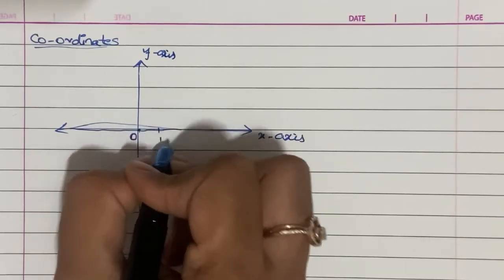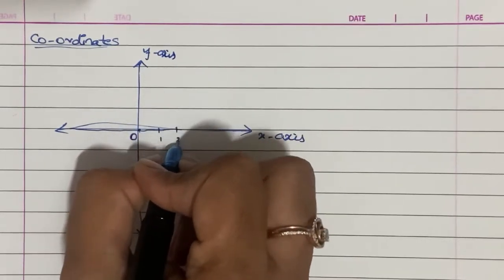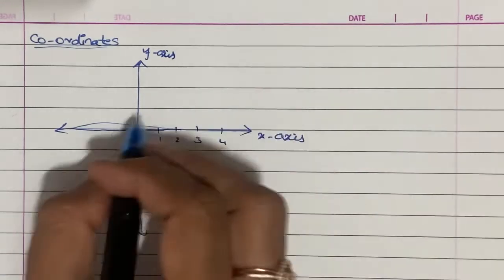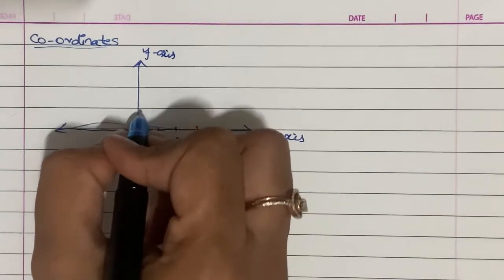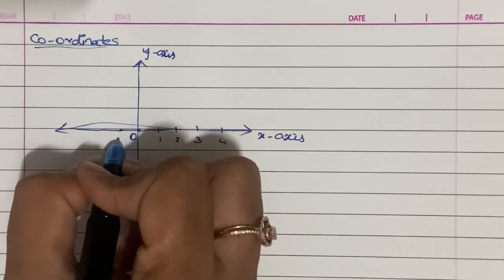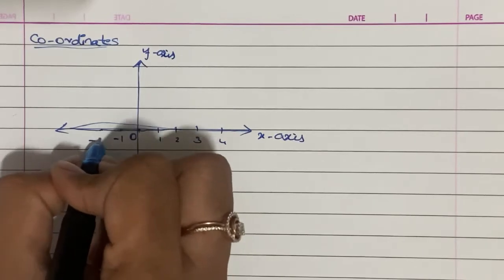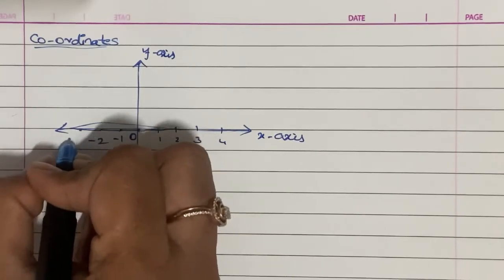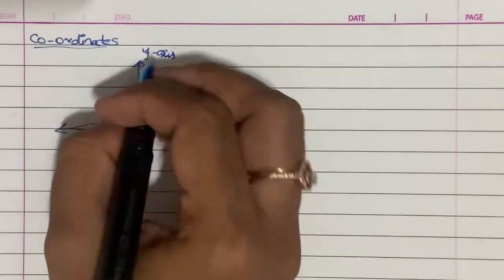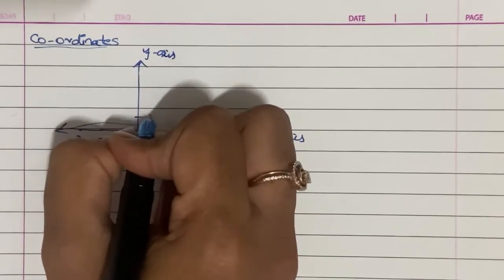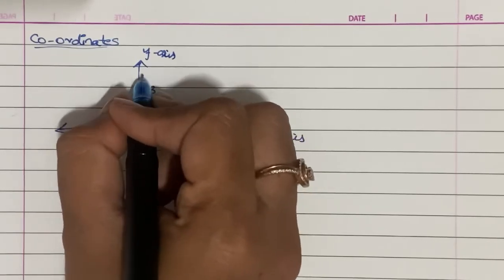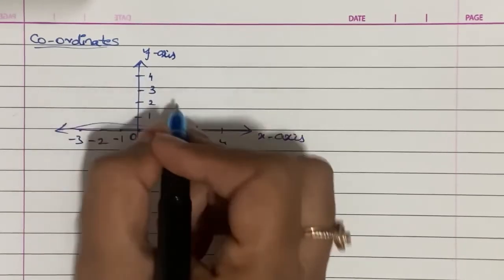I will show you the coordinates: 1, 2, 3, 4 going to infinity along the x-axis. Similarly on the y-axis, the coordinates of positive values are positive: 1, 2, 3, 4.